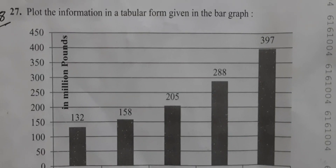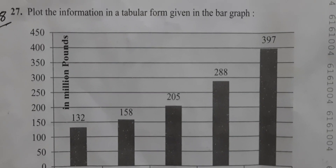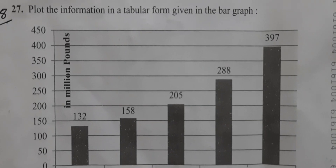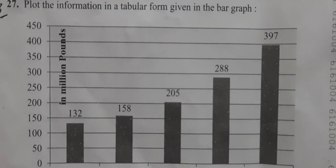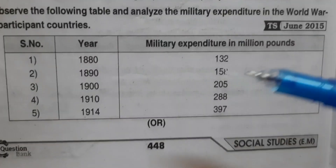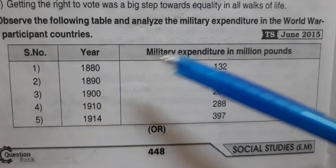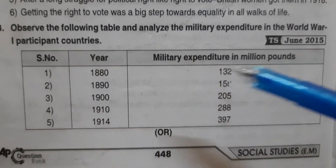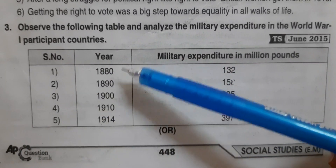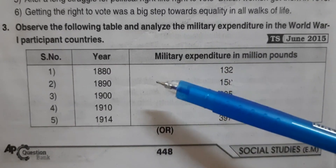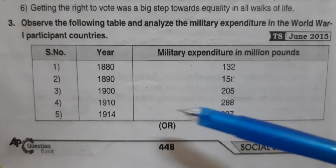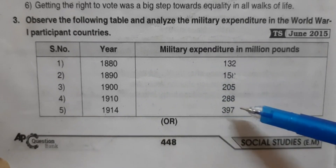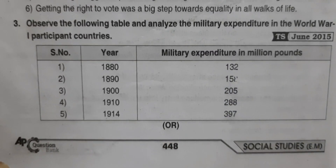Question 27: Plot the information in a tabular form from the given bar graph. The table shows military expenditure in million pounds by year: 1880 — 132, 1990 — 151, 1998 — 205, 1910 — 288, 1914 — 300. This is worth four marks.